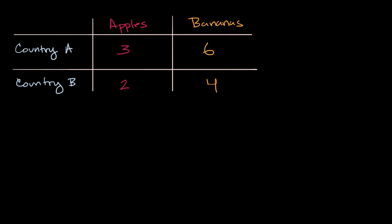Let's say we're in a very simplified world where we have two countries, country A and country B. They're each capable of producing apples or bananas or some combination of them. If country A put all of their energy behind apples in a day, they could produce three apples. And if they put all of their energy behind bananas in a day, they could produce six bananas.